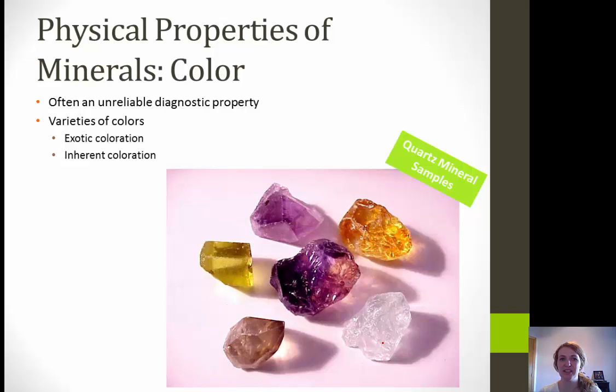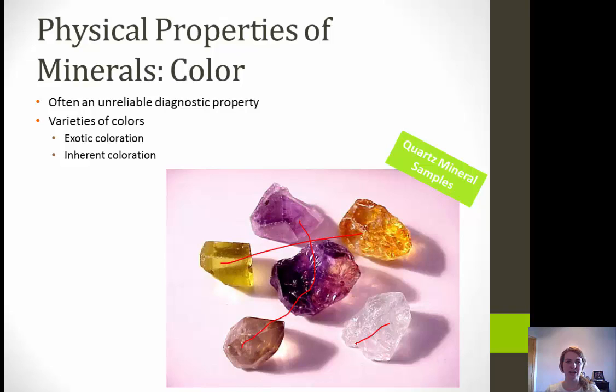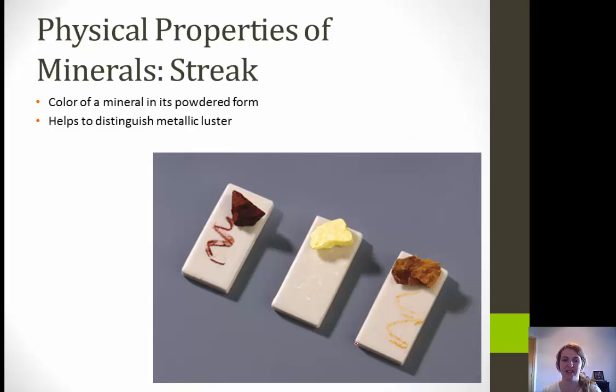Next we're going to talk about color, which is often an unreliable diagnostic property because some minerals can have a variety of different colors. You can have exotic coloration or inherent coloration. Looking at the image, we have a whole bunch of quartz samples that have a variety of different colors — yellowish orange, shades of purple, and clear — changing depending on different environmental factors and impurities in their chemical structure. Color is typically one of the properties I use the least.